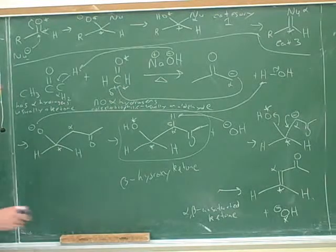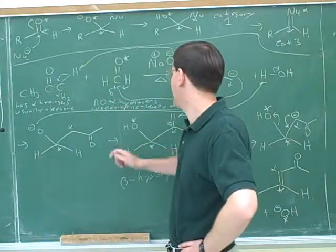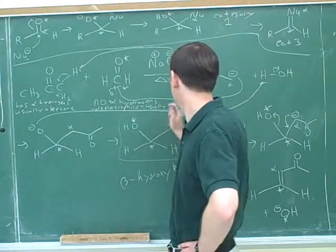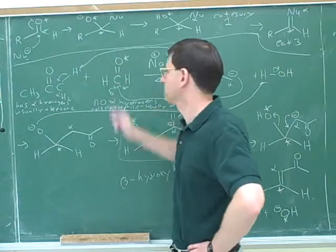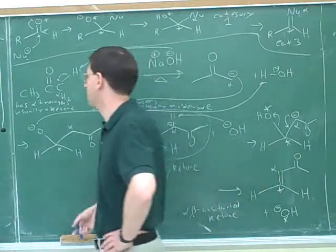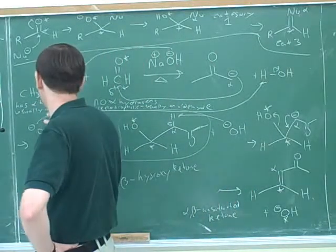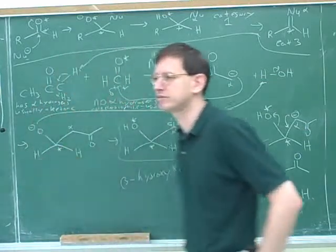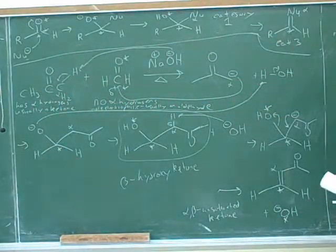If you want to do a good synthesis, you want to set it up so one molecule has no alpha hydrogens and is more electrophilic — usually that's the aldehyde, so it acts as the electrophile. The other molecule does have alpha hydrogens so it can form the enolate, and it should be less electrophilic, usually making it the ketone. In the absence of heat you'd get one product.